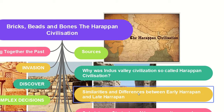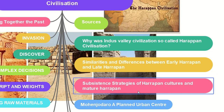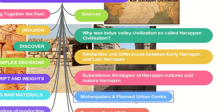Third, we will be looking at the similarities and differences between early Harappan and late Harappan civilization. Next, we will be learning about the subsistence crisis of Harappan culture and mature Harappan. Then we will look at the case study of Mohenjo-daro, a planned urban center.